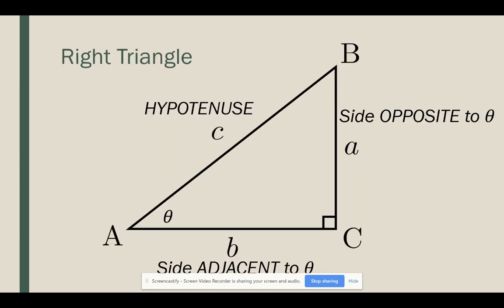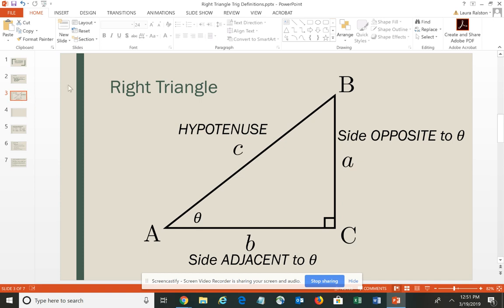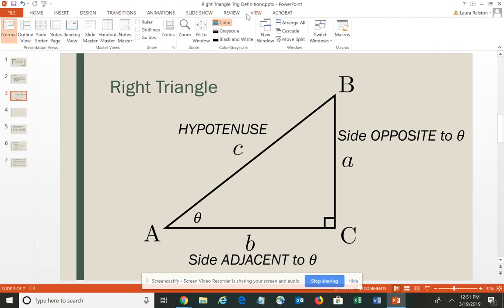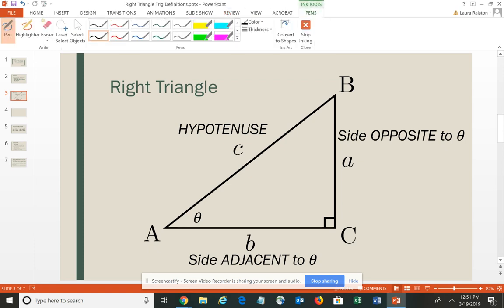Let's review for a minute. With our right triangle, one of the key things as we begin focusing on right triangle trigonometry is that you have to focus on the angle you're interested in. You have a focal point, and typically that focal point is named theta, usually written in the little bend of the angle. It doesn't have to be theta — we could even use a capital letter A to name the angle.